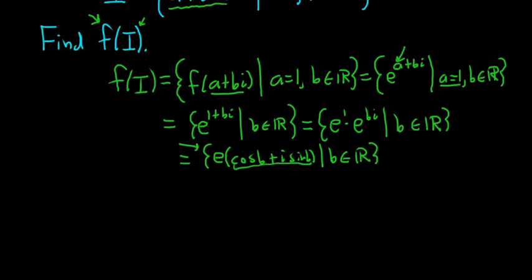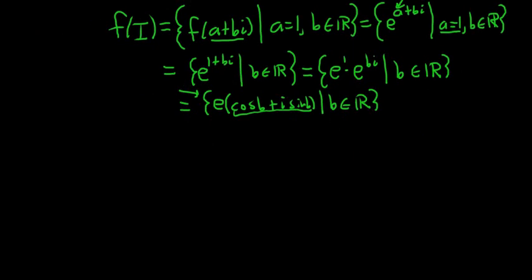So cosine b plus i sine b lies on the unit circle, right? So basically, if you were to graph just this part here in red, you would get the unit circle. What the e does is it stretches the unit circle. It makes it a circle of radius e.